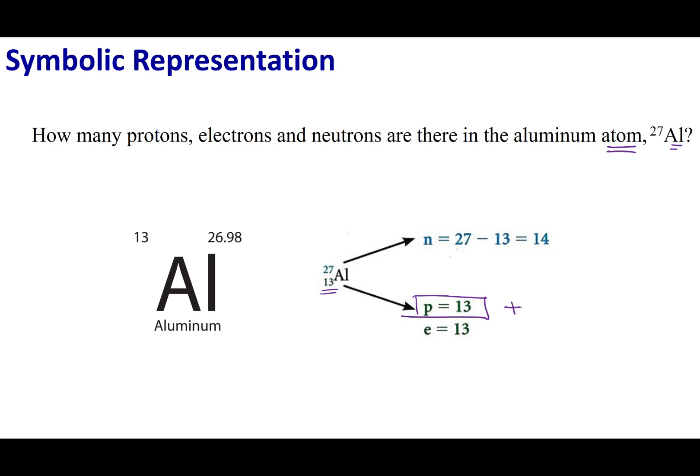And so, if I want to balance out 13 positives, I need 13 negative charges. And remember, electrons are negatively charged. So, 13 protons, 13 electrons,